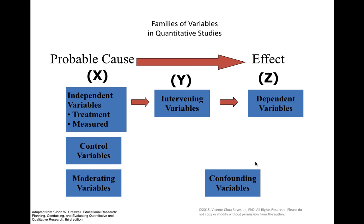In the families of variables in quantitative studies, we have independent variables — also called treatment, measured, control, or moderating variables — as the probable cause. The dependent variable represents the effect. Intervening variables stand between the probable cause and effect, and you are aware of or control them. Confounding variables also have an impact on the dependent variable, but you are not aware of them and they are beyond your control.